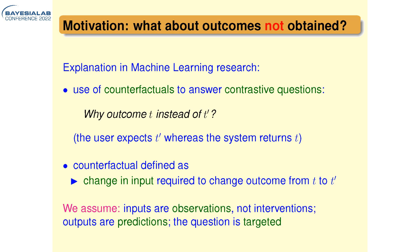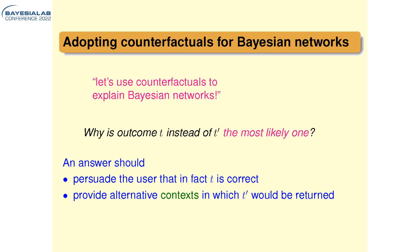With this going on in machine learning, and looking at Bayesian networks where this type of explanation was not used yet, we tried to use contrastive counterfactuals for explaining Bayesian networks. We assume a non-causal situation — inputs are observations, not interventions, and outputs are predictions. The question is targeted, specifically interested in an alternative outcome T prime. Because we're looking at Bayesian networks, we want to refer to a single outcome — the most likely one.